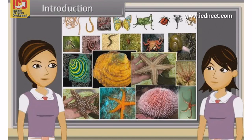Now we are going to discuss characteristics of hemichordates, chordates, vertebrates, cyclostomata, chondrichthyes, osteichthyes, amphibians, reptilia, aves and mammalia.